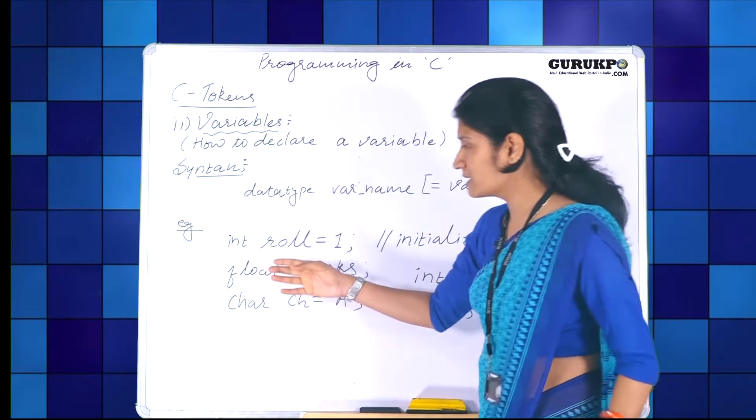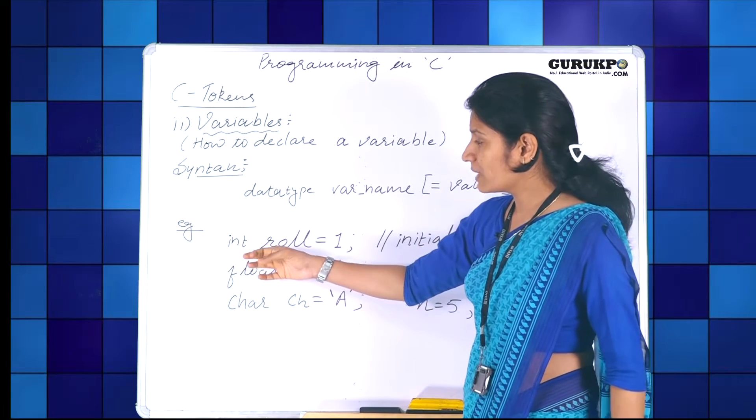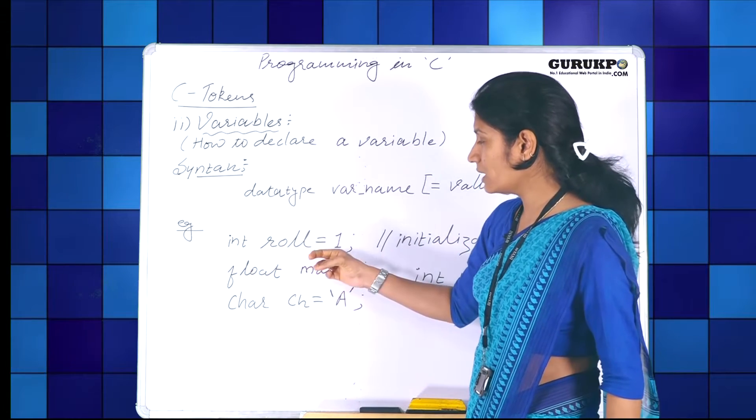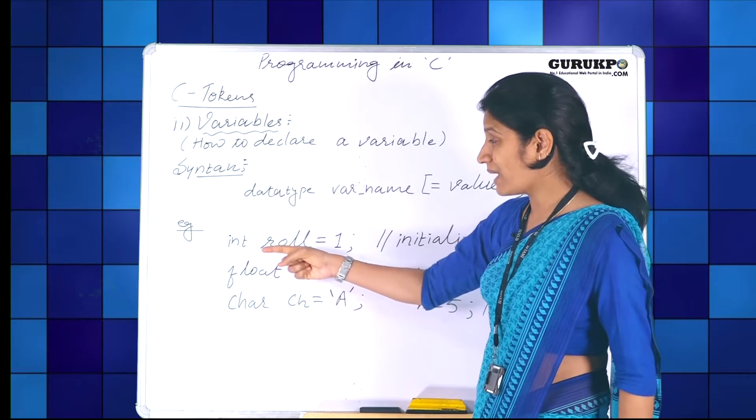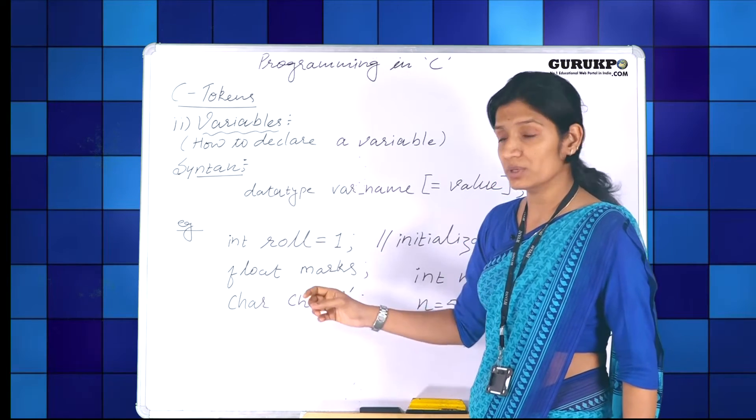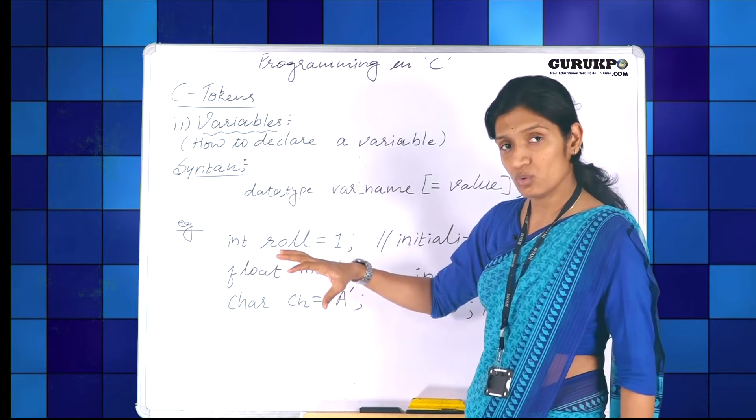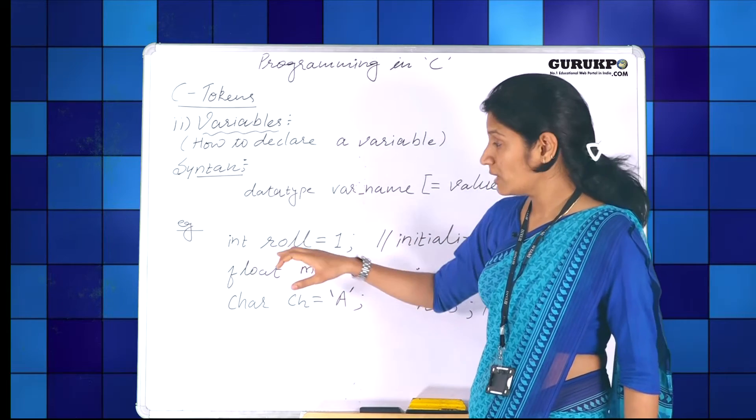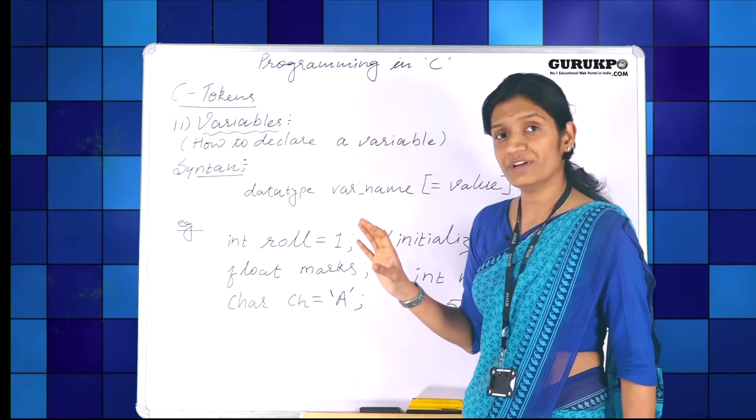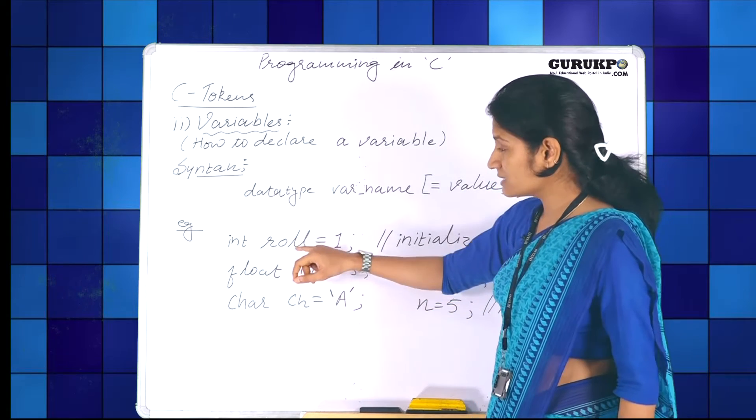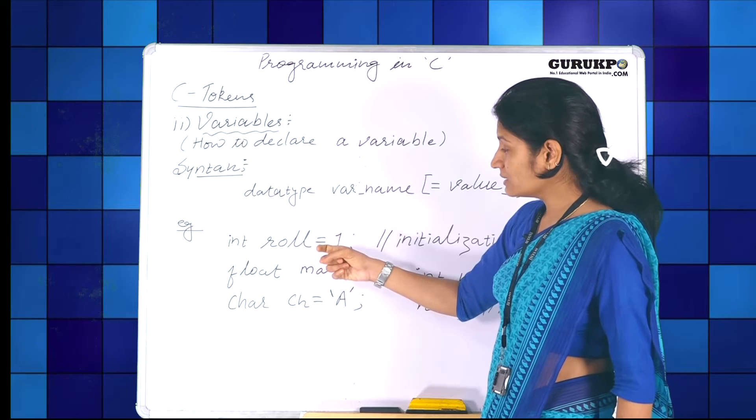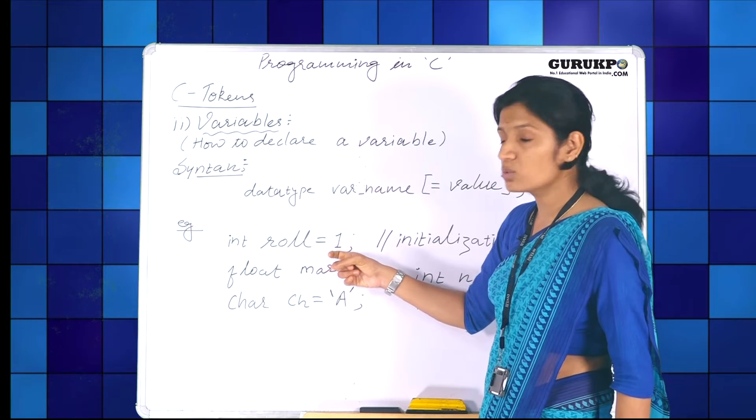Now we can see some examples as well. First example, I have taken int role equals 1. We can compare this example with the syntax given. Int is the data type that this variable is going to hold. The variable role will hold the data of integer type. This is the name of the variable. Then this is the value assignment equals 1.